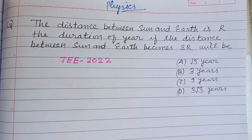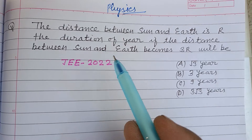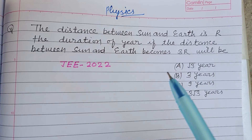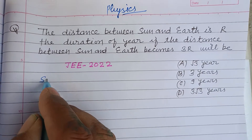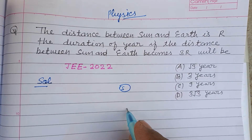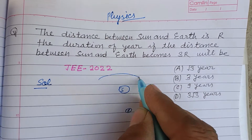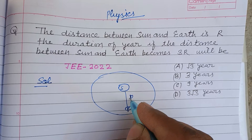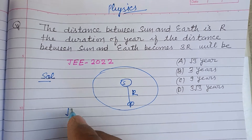Hello viewers, warm welcome to this YouTube channel. Question from Jimane 2022: the distance between sun and earth is r. The duration of year if the distance between sun and earth becomes 3r will be — so here, this is the sun and this is the earth, revolving around the sun at a distance of r.